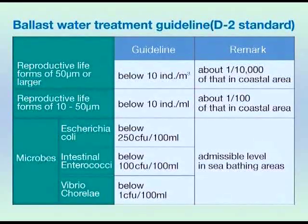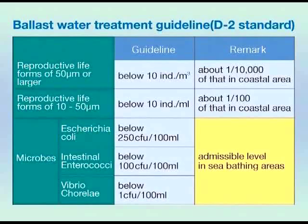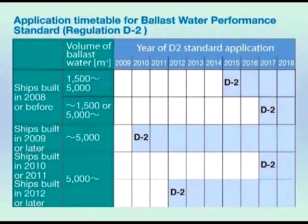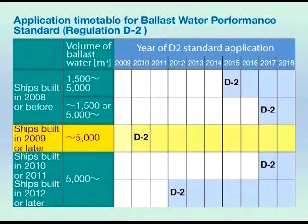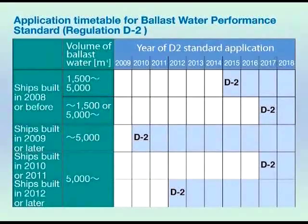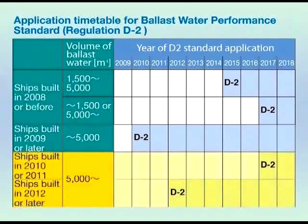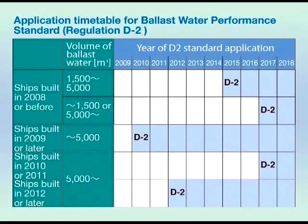For this reason, the IMO established the strict D2 standard for ballast water treatment. Under the D2 standard, ships must purify their ballast water to a level that would allow ocean bathing before it can be discharged into the sea. The start of regulation is currently awaiting ratification by the IMO. However, this standard will be applied to new ships with a ballast water capacity of less than 5,000 cubic meters constructed after 2010, and to large-scale ships with ballast water capacities of 5,000 cubic meters or more beginning in 2012. Worldwide, approximately 65,000 ocean-going ships will be subject to this regulation.